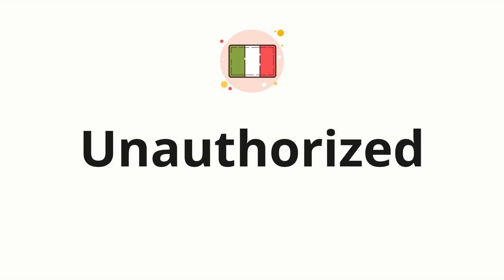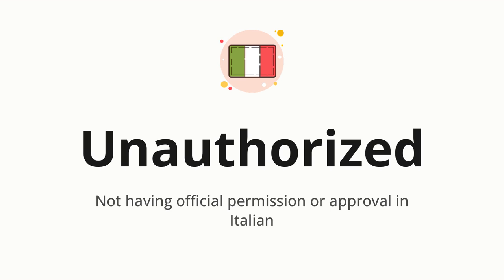Welcome to How to Pronounce. In today's video, we'll be focusing on a new word that you might find challenging or intriguing. So without further ado, let's dive into today's word: 'unottorizid,' which means not having official permission or approval in Italian.